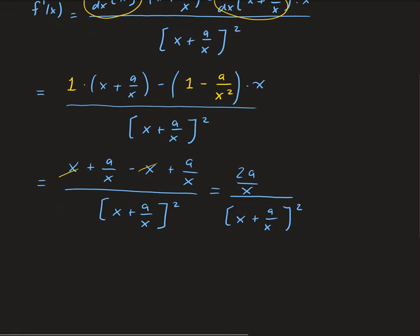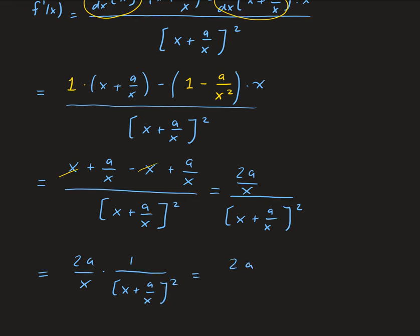From here we can simplify further. We can put the x in the denominator, so this is the same as 2a over x times 1 over x plus a over x squared, which gives us 2a all divided by x times x plus a over x squared.